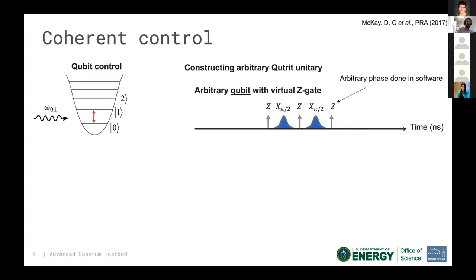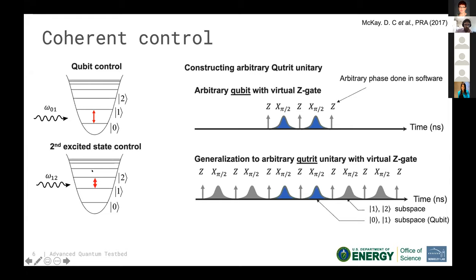When constructing single-qubit pulses, you send a tone at the transition frequency between the zero and one levels, and by calibrating the pulse time and amplitude you construct a π or π/2 gate. We then use so-called virtual Z gates — a software arbitrary phase — to construct an arbitrary single-qubit unitary. We can do exactly the same by addressing the second transition of a transmon, generalizing this to arbitrary single-qutrit unitaries using virtual Z gates.